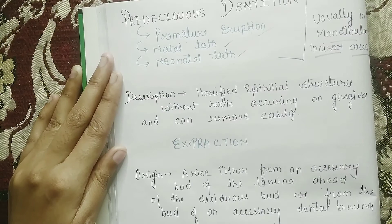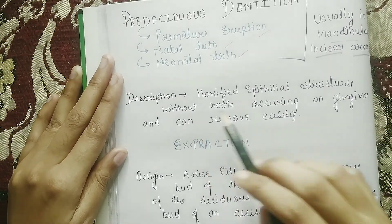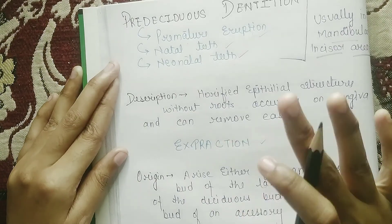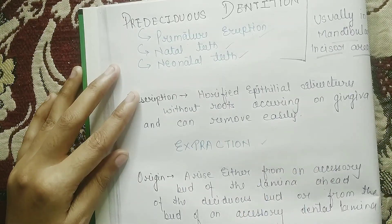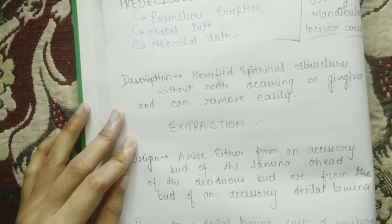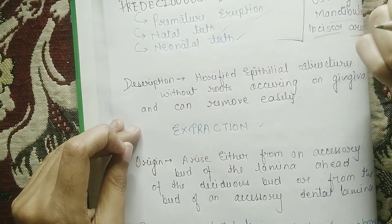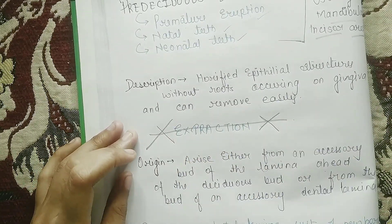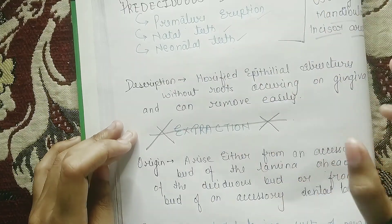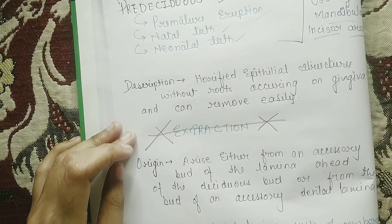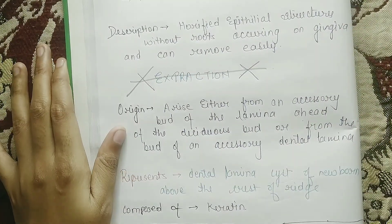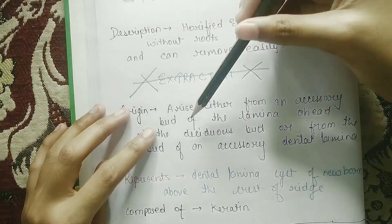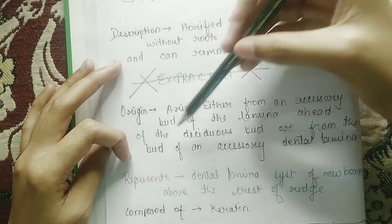You will get to see these in the mandibular incisor area. The description: this is a hornified epithelial structure without roots — roots are not developed — occurring on the gingiva and can be removed easily. Extraction is done carefully because the baby is involved. If the condition is very severe and the tooth is not released, then it needs to be extracted, but in most cases it is easily removed.